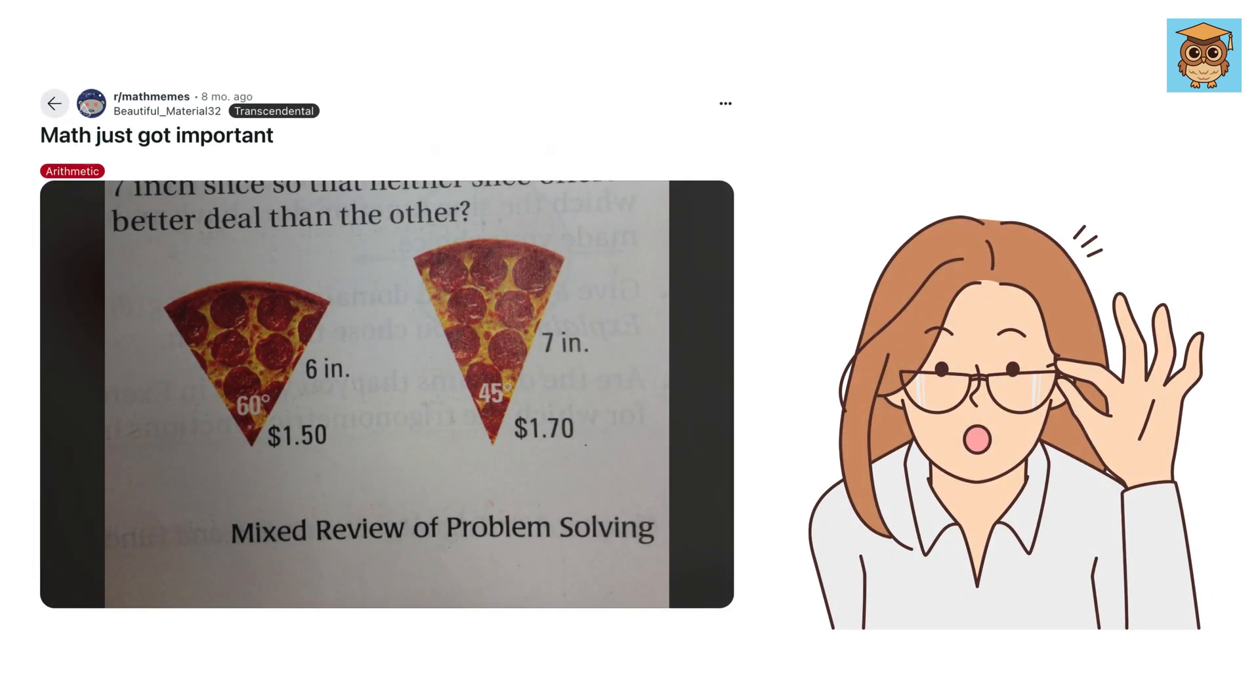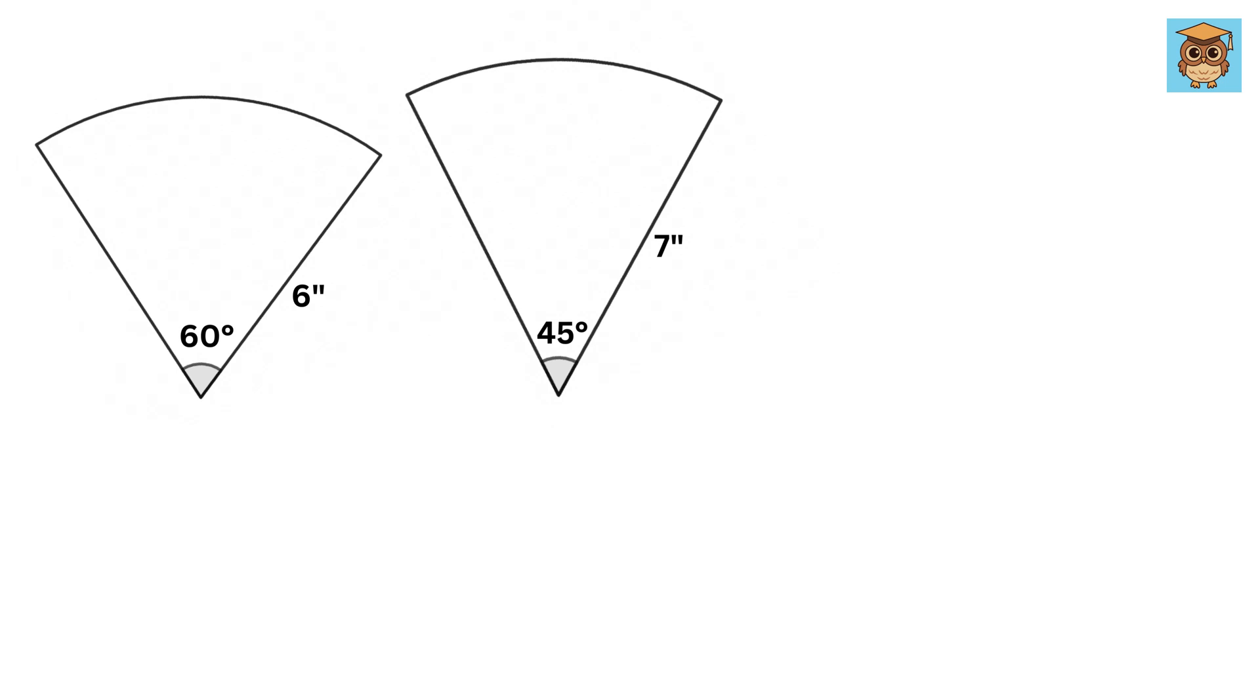Math just got important. Let us look at it. Here we have two slices of the same pizza. This one is 6 inches, 60 degrees, and it costs $1.50, whereas this one is 7 inches, and angle here is 45 degrees, and it costs $1.70.